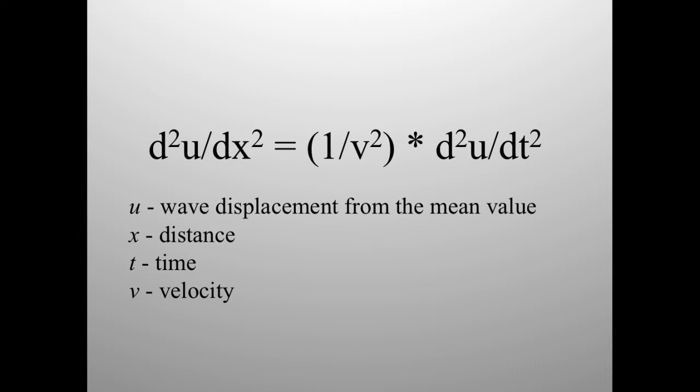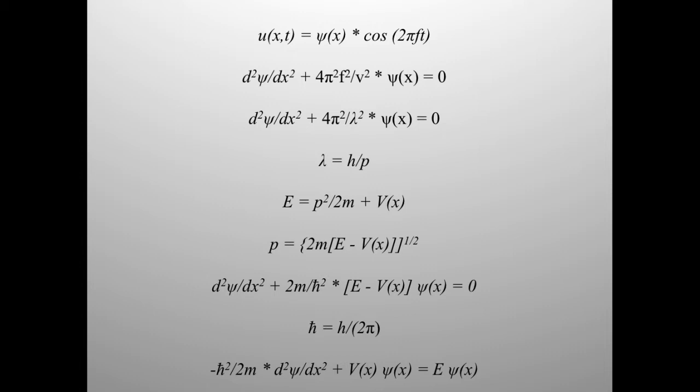Recall that the classical wave equation is: the second derivative of u with respect to x equals (1/v²) times the second derivative of u with respect to t, where u is the wave displacement, x is distance, t is time, and v is velocity. A solution can be found using separation of variables: u(x,t) = ψ(x) × cos(2πft), where f is the frequency and ψ(x) is the spatial amplitude of the wave. Substituting this into the differential wave equation gives an equation for the spatial amplitude ψ(x).